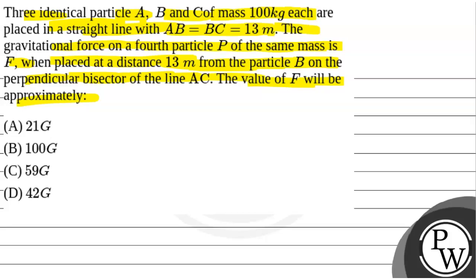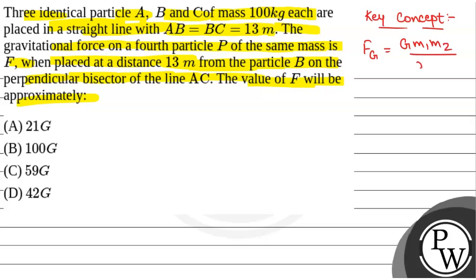We will solve this question. First, we will see what will be the key concept used to solve this question. The key concept is the force due to gravitation: Fg is given by G times M1 times M2 divided by R squared, where G is the gravitational constant, M1 and M2 are the masses, and R is the distance between the two masses.